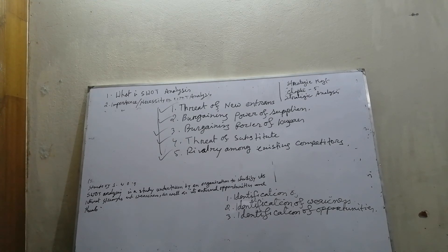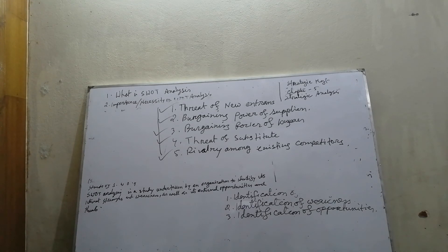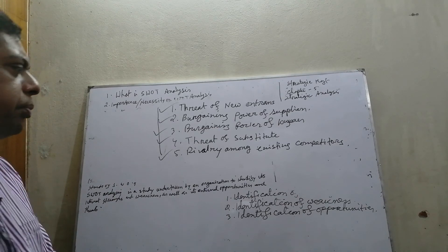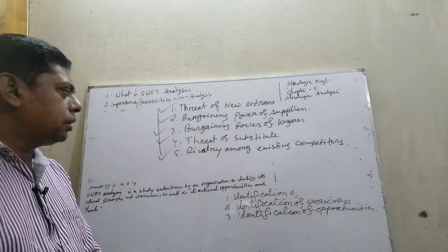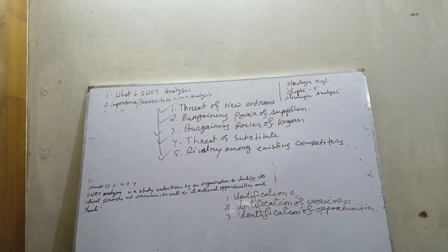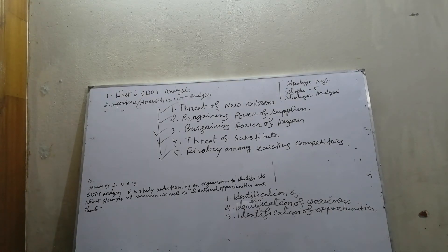Although Porter originally introduced five forces affecting an industry, scholars have suggested including a sixth force: complements. Complements increase the demand of the primary product with which they are used.